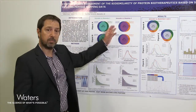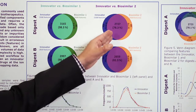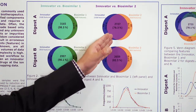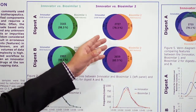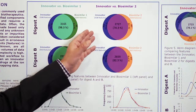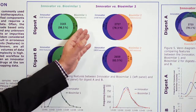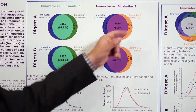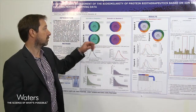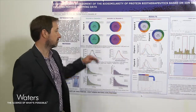On the other hand, if you compare the innovator versus biosimilar two, you can already see that the number of common features is lower, around 78%, and the number of unique features for the innovator is higher — more than 13% — and you have more than 8% unique features for biosimilar two, for both digest A and digest B.